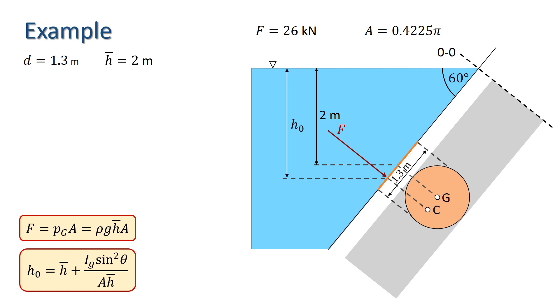The second moment of area about the centre of gravity for a circle is given by pi d to the 4th over 64, and sin squared theta equals 3 quarters in this case. Thus, we have everything we need to substitute into the formula for H0, and we find that the centre of pressure is 2.04 metres below the water surface.